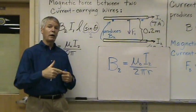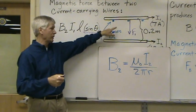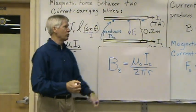And R is the distance between the wire and the location, the magnetic field that we're measuring. So that distance is 0.2 meters.